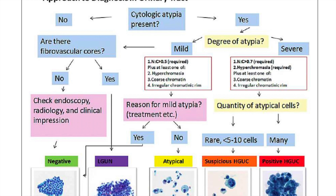We can dive into more detailed resources in our studies, but when we approach a urine specimen, after we determine if the specimen is adequate based on the cellularity, what kind of cells we're seeing, the volume, etc., we're going to move on and assess the atypia. The categories we'll land on are: negative for high-grade urothelial carcinoma, low-grade urothelial neoplasm (LGUN), atypical, suspicious for high-grade urothelial carcinoma, or positive for high-grade urothelial carcinoma.